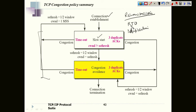RTO means retransmission timeout timer. Whenever a packet is delivered and not acknowledged within this RTO time period, a retransmission is required — this is one category of retransmission. The second case is when a sender receives three duplicate acknowledgements for a particular segment, then that segment will be delivered again. In congestion policy, if retransmission happens because of RTO, this is a strong congestion; if it happens because of three duplicate acknowledgements, this is a weaker congestion, and the communication must behave accordingly.